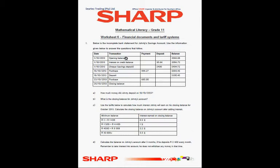So we have an opening balance — that's the amount of money that you start with at the beginning of the month. Interest on the credit balance, so that's the amount of money that you receive from the bank. Check savings deposit, so this is the amount of money that you deposited into your bank account. Purchase — you went to the store and bought an item worth 444.27 cents. Then there's a deposit, a purchase, and the closing balance.